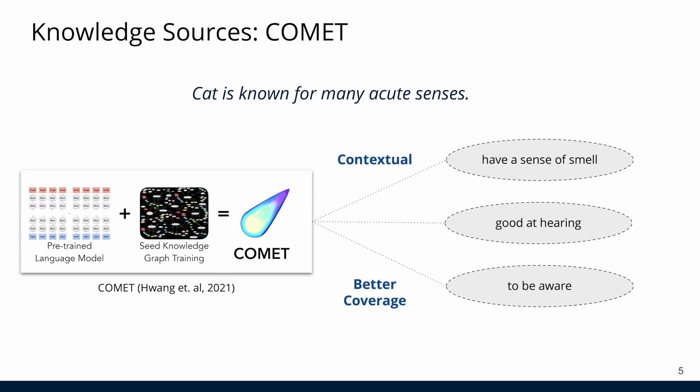Therefore, we propose to use COMET, or Common Sense Transformer, a language model trained on knowledge graphs, to generate relevant common sense given the image and the question as context.